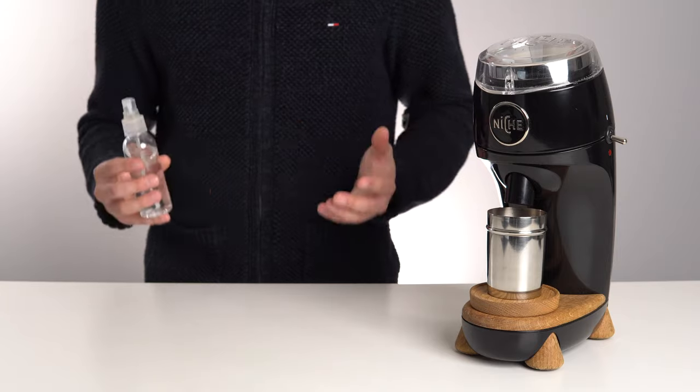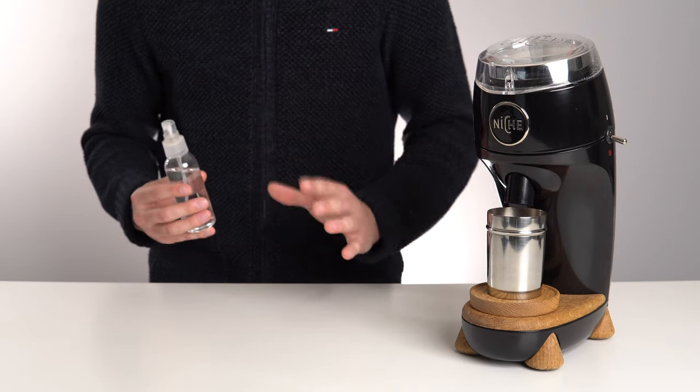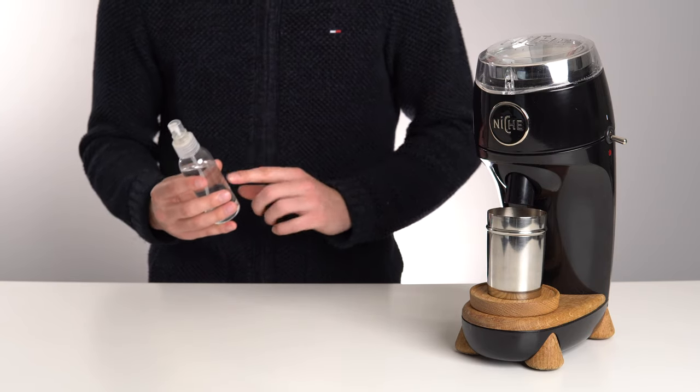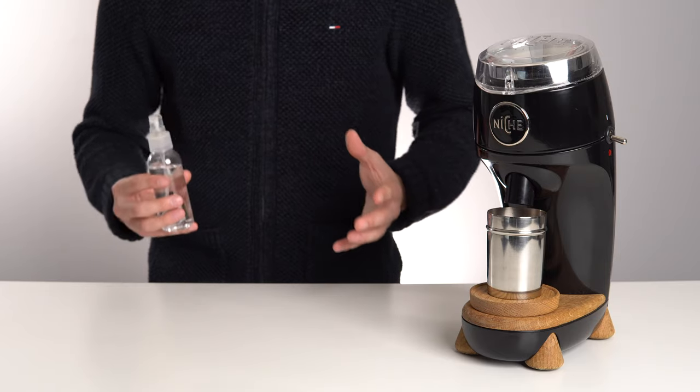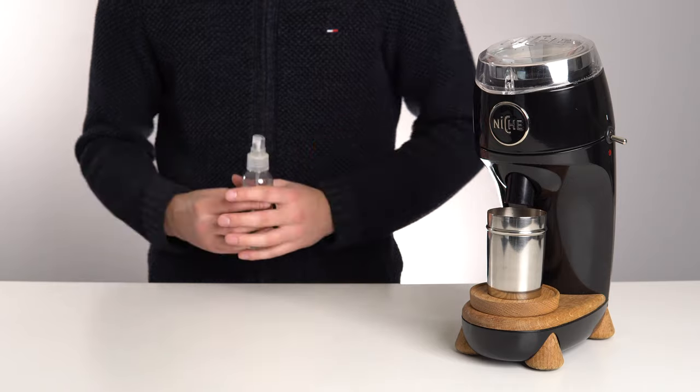And this isn't just about static cling either. The less humidity that's in the air, the faster your shot will run if everything else is equal. By reintroducing some moisture into the grinds, it means you don't need to compensate quite as much with your grind setting to slow down the flow.